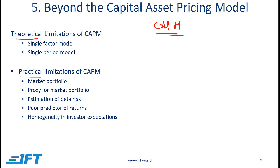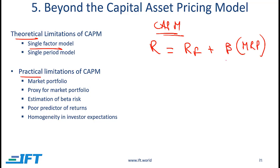Under theoretical limitations, the first issue is that CAPM is a single factor model. The expected return is equal to the risk-free rate plus beta times the market risk premium. The only factor related to the asset is beta. So essentially, this model says that the expected return is estimated based on a single factor. Factors other than beta don't matter, and that's clearly an issue because there will be other factors that drive returns.